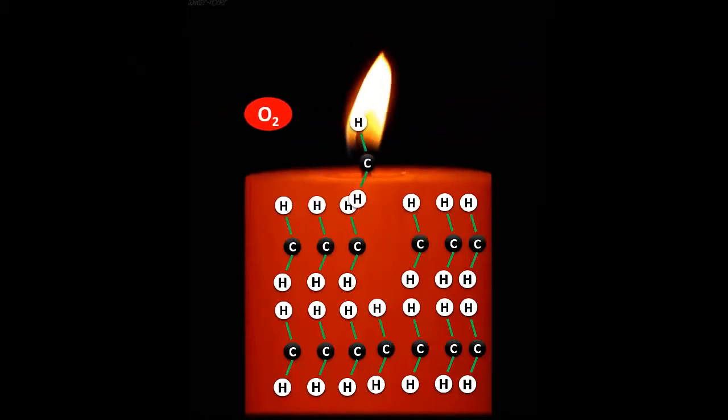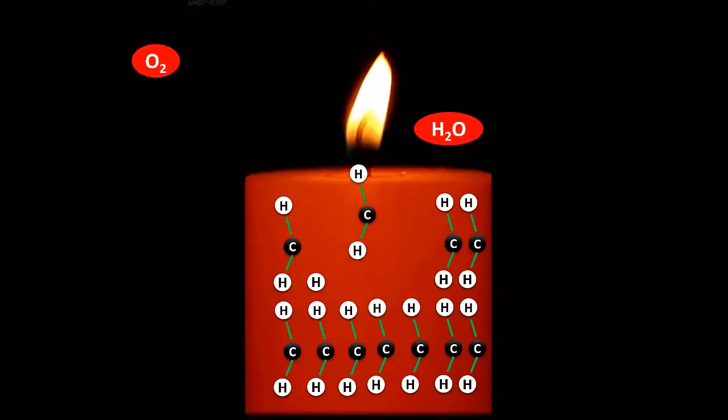Hydrogen, which is also a breakdown from the wax, reacts with oxygen to form hot water. This hot water, along with the wax which is not broken into hydrogen and carbon, flows down.